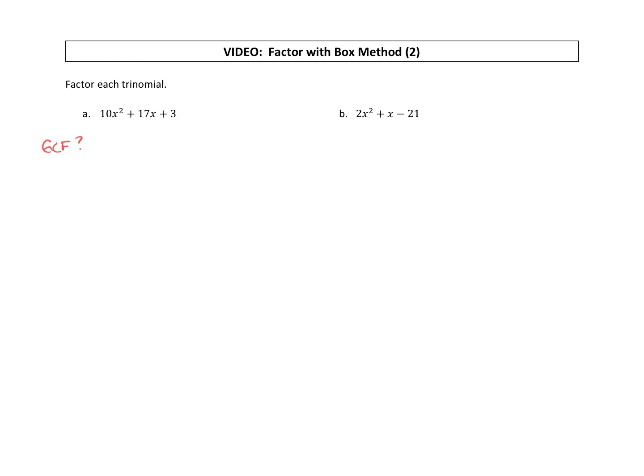Do these three terms have anything in common, any common factors? No, they do not. Next, what we want to notice is that our a value is 10. So this is not one of those trinomials where it's just x squared. There's a 10 in front of the x squared. So when there's a number in front of your x squared, we can factor with the box method.